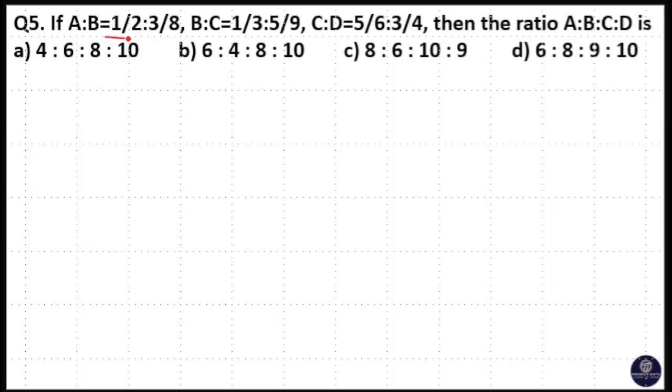A is to B is 1/2 is to 3/8, and B is to C is 1/3 is to 5/9. C is to D is 5/6 is to 3/4. Then ratio of A is to B is to C is to D. So we have to find A, B, C, D ratio.